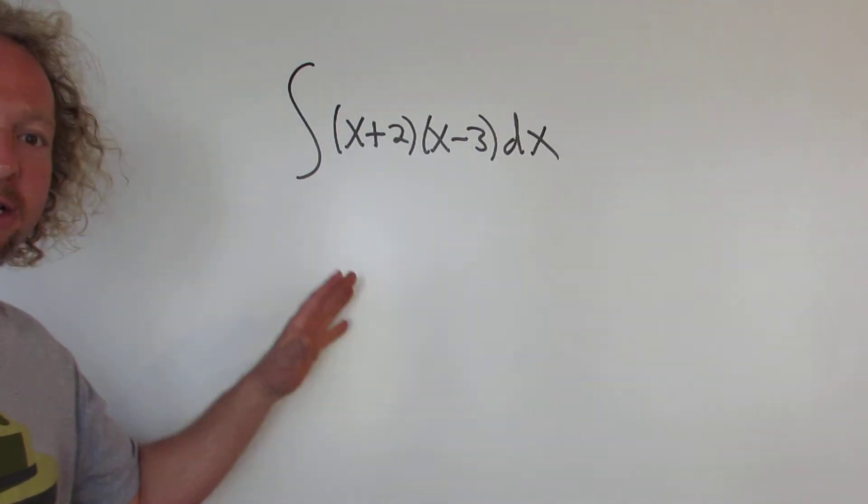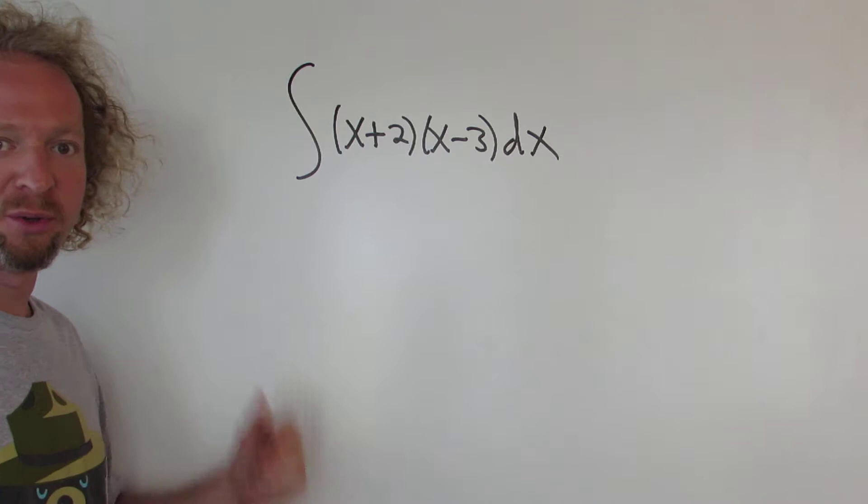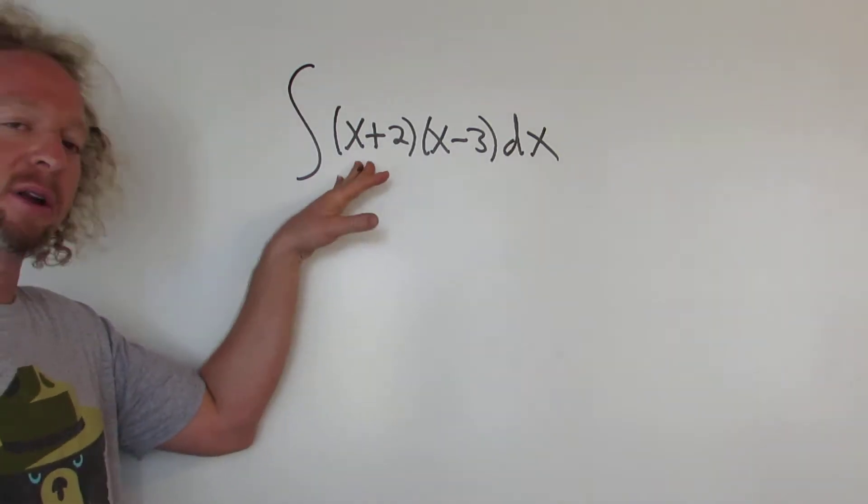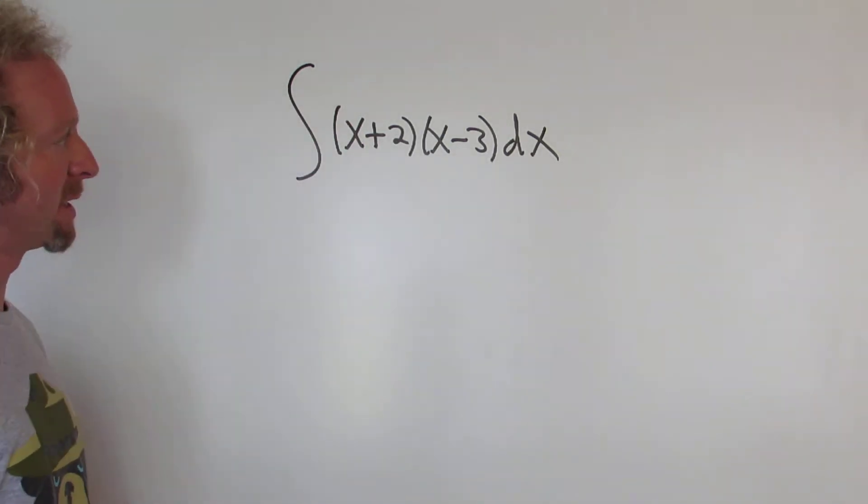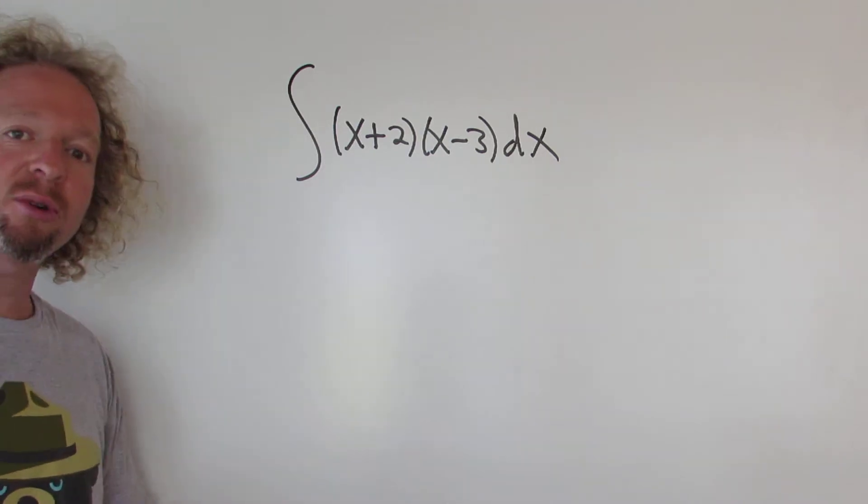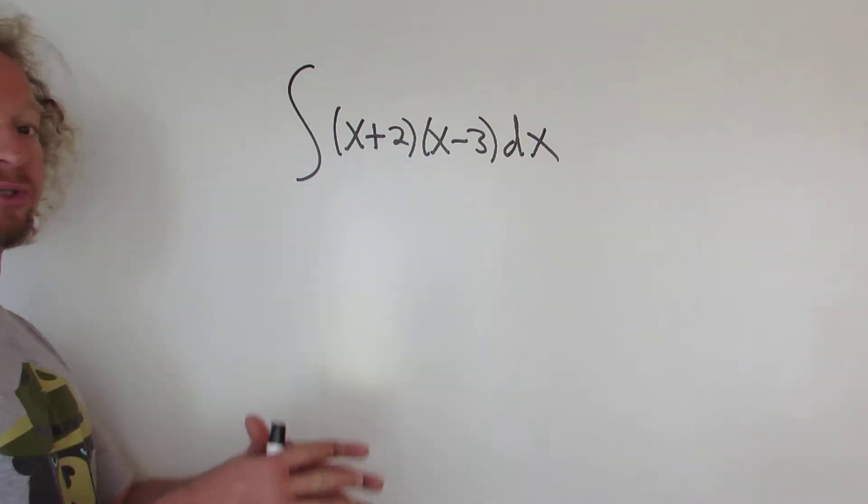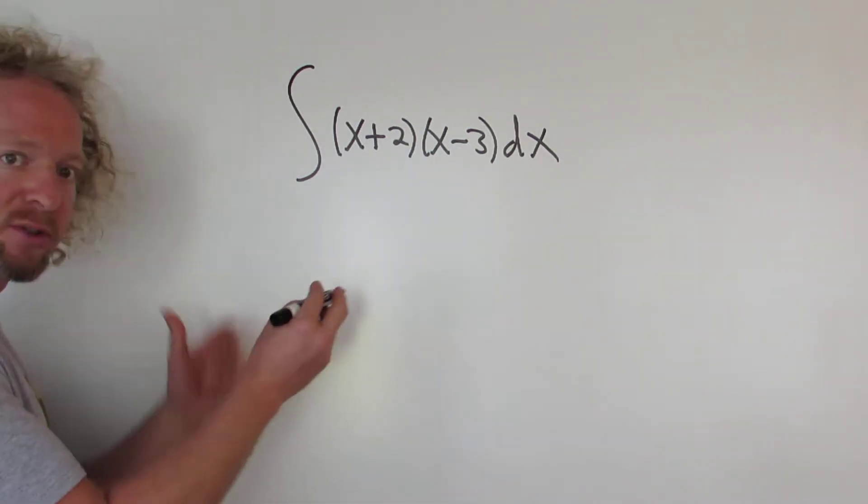In this video, we have an indefinite integral and we're going to integrate it. You'll notice we have a product, x plus 2 times x minus 3. There is no product rule for integration, so the natural choice here is to just multiply everything out. Let's go ahead and do that.